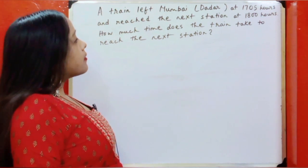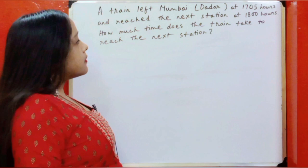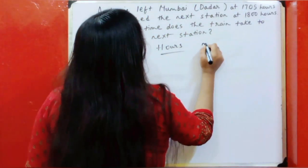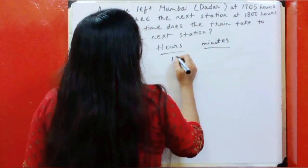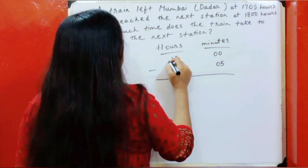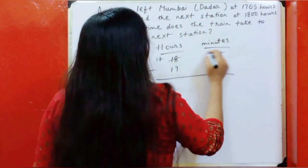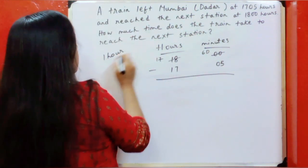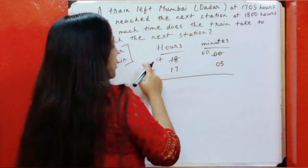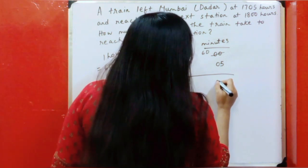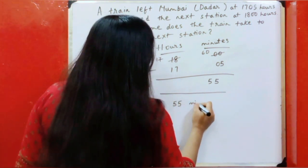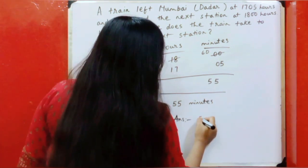A train left Mumbai Dadar at 17:05 hours and reached the next station at 18:00 hours. How much time does the train take to reach the next station? We have to subtract 18:00 minus 17:05. I've borrowed one from here so it is 17, and I've borrowed 60 — because one hour equals 60 minutes — so 60 minus 05 gives 55 minutes. The answer is 55 minutes.